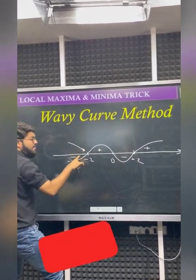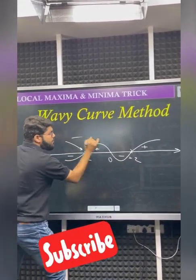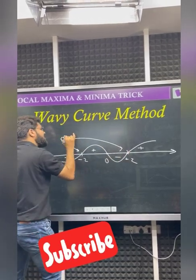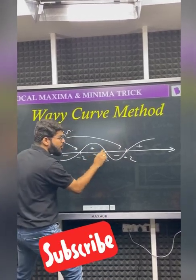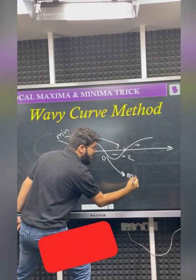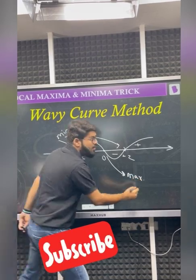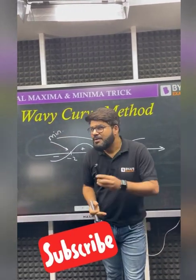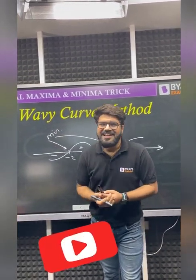Whenever there is a sign change from negative to positive, that point is a local minima. A sign change from positive to negative is a local maxima. If you like the trick, please subscribe to our channel and let me know in the comment box how you liked the video.